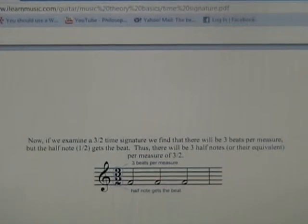In this example, we have a time signature of three two. Here you have three beats per measure, and the half note gets the beat. So in this time signature, you would have three half notes per measure, or the equivalent of three half notes.